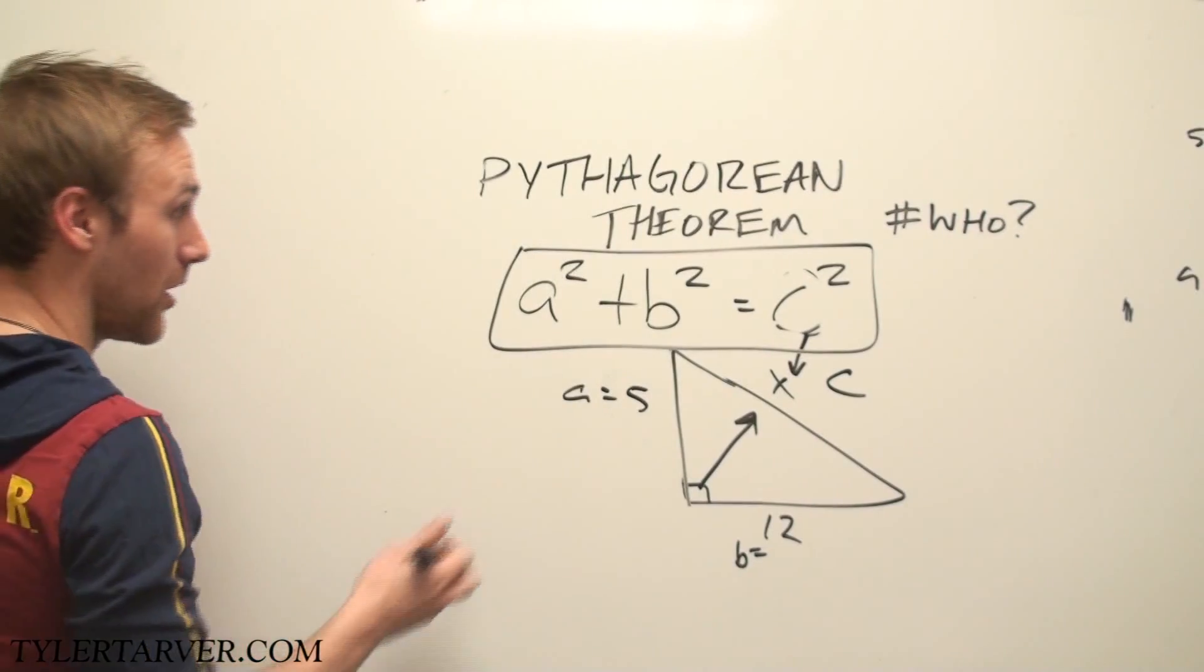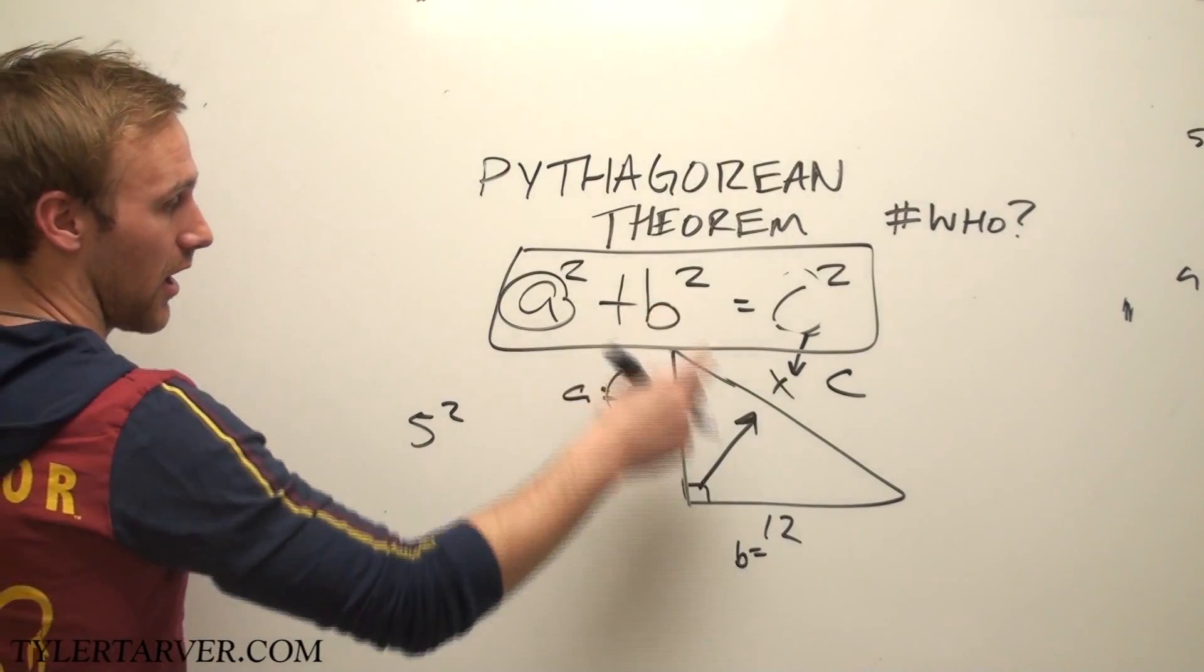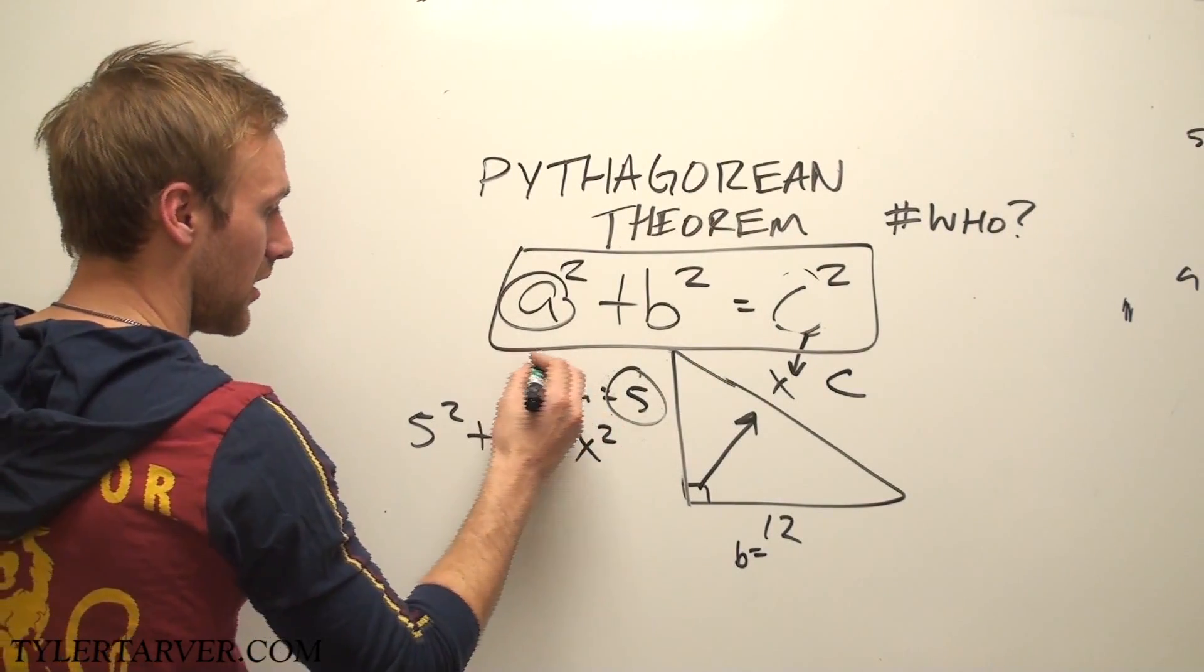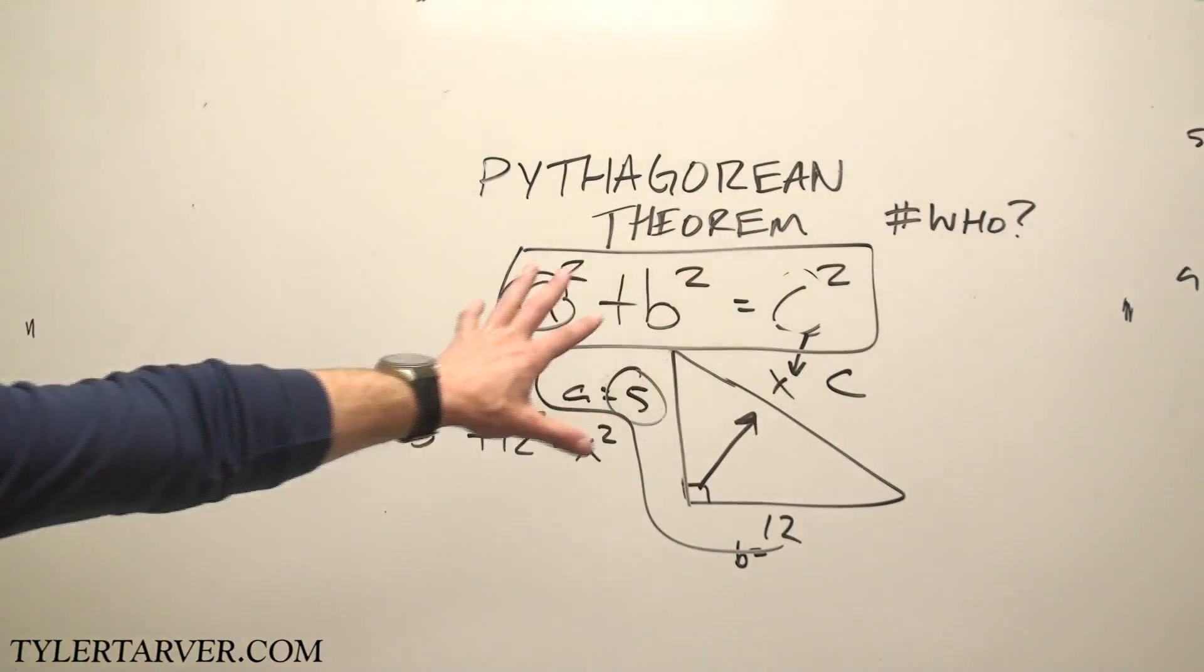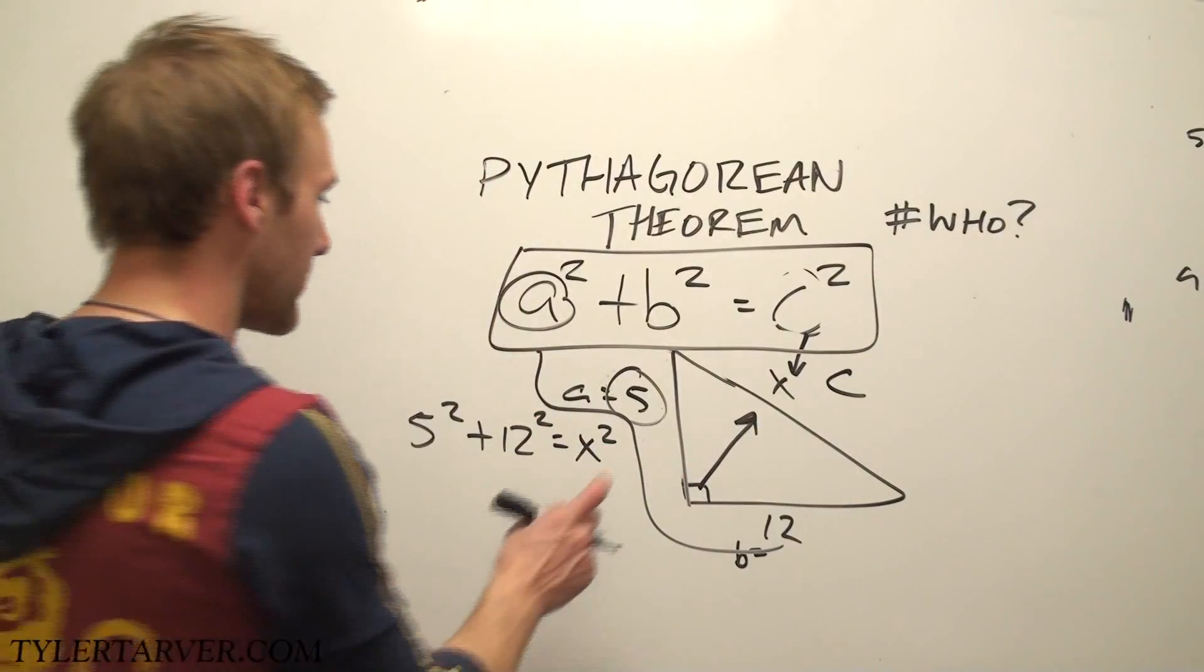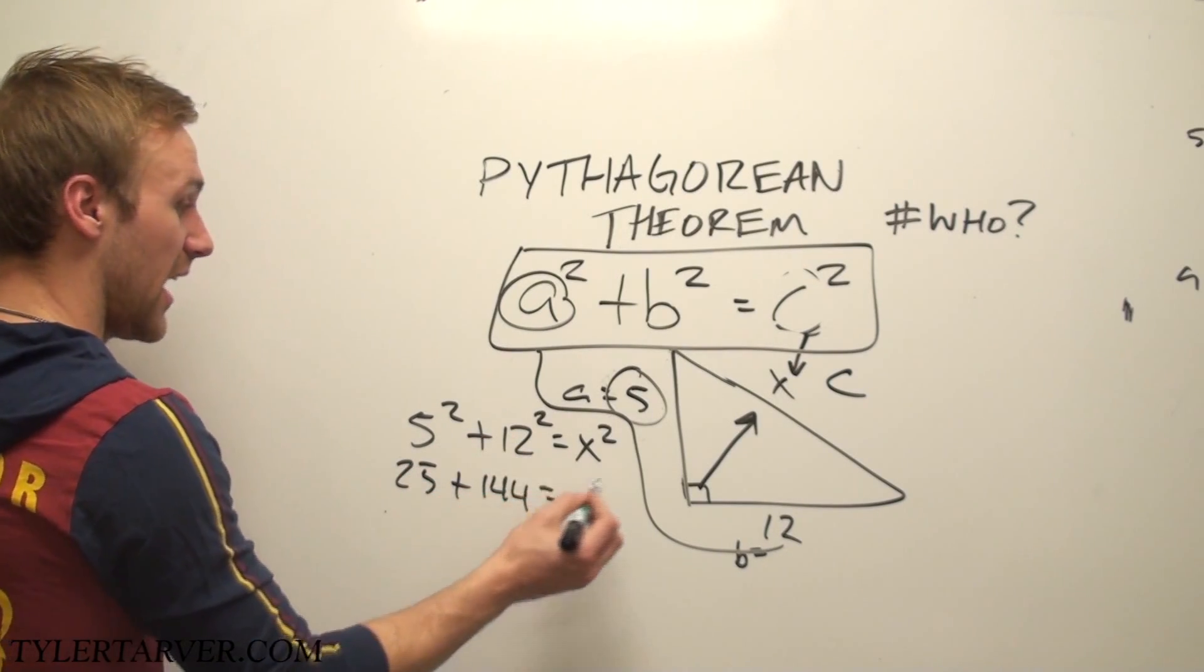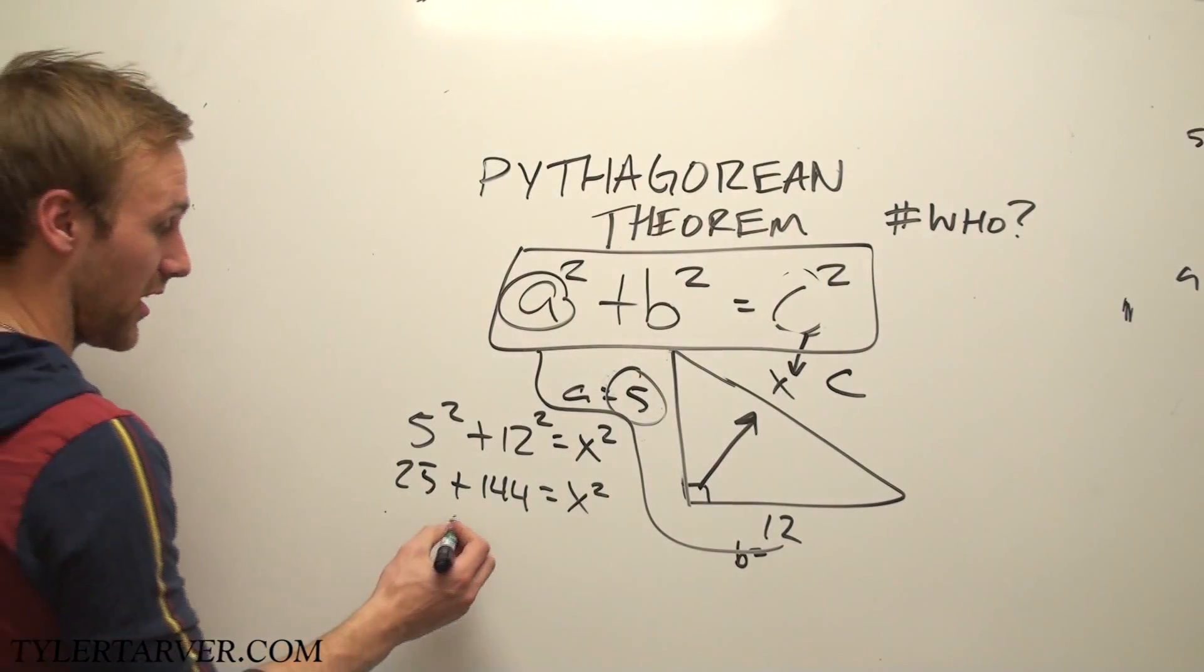A squared, what do I plug in for A? Five. So it's five squared. Our B is 12, so it's plus 12 squared equals C squared. Do we know C? No. It's X squared. We've got five squared plus 12 squared equals X squared. Now we don't care about this triangle right now because we are going to find out, magic, what X is. Five squared is 25, twelve squared is 144. X squared is, we don't know, that's why we're working the problem. Twenty-five plus 144 is 169.